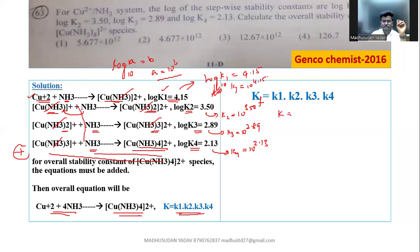So K overall stability constant, you can write it as KF formation constant or KF stability constant, both are same. Now what is the value of K1? It is 10 power 4.15 into K2 is 10 power 3.50 into 10 power K3 value is 2.89. Now 10 power K4 is 10 power how much? 2.13.